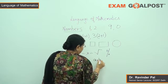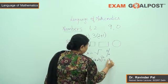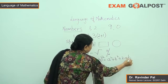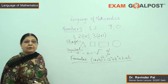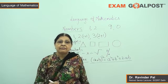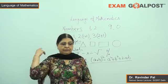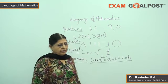a plus b whole square is equal to a square plus b square plus 2ab. This is a simple formula. Area and volume, there are formulas.